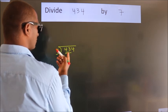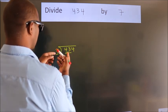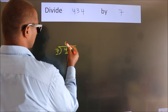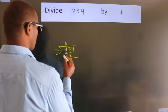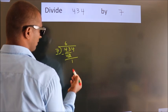A number close to 43 in the 7 table is 7 times 6 equals 42. Now we should subtract, we get 1.